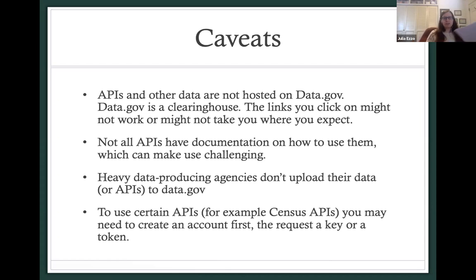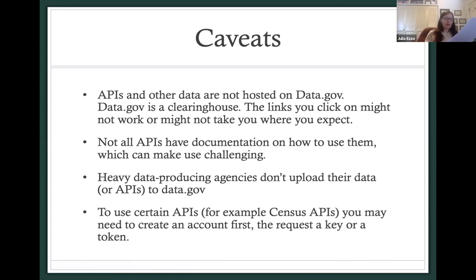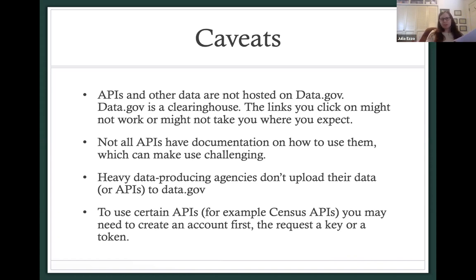Not all APIs include documentation, which can be frustrating — especially if you're just getting started, as you may need to do a fair amount of trial and error to get your API queries to work properly. A good API will include detailed documentation, as I showed with the EPA. This helps guide the user, but documentation is not a requirement. So you may get really lucky and find great documentation that helps you get started with the API and build successful queries, but that's not always the case.